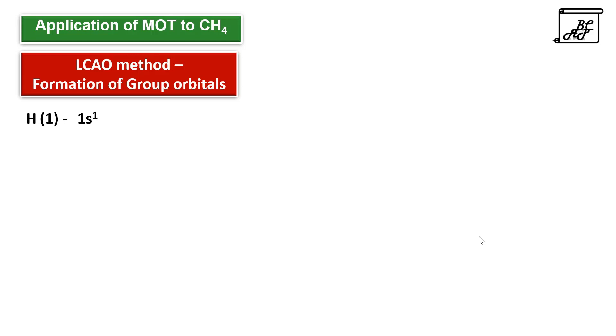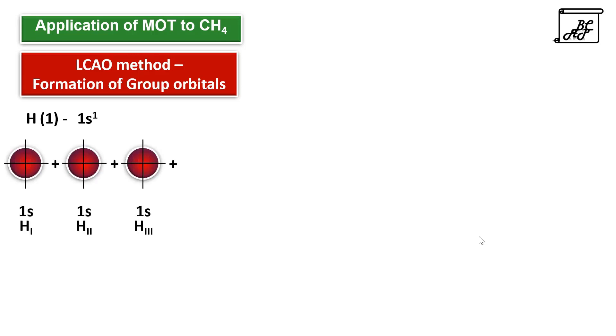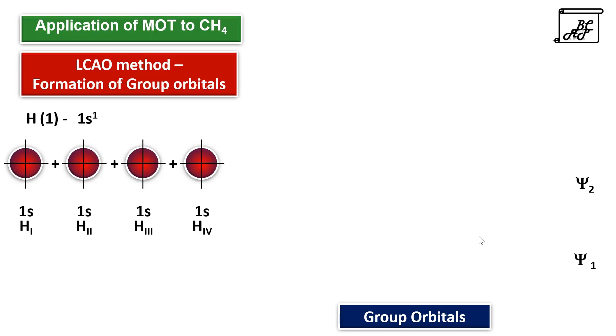The next step is the linear combination of atomic orbitals, that is the formation of group orbitals. For this, we will consider the hydrogen atoms. There are total 4 hydrogen atoms with 1s orbitals containing 1 electron each. These 4 orbitals will overlap with each other. As 4 are combining, 4 group orbitals will be formed: psi1, psi2, psi3, and psi4.